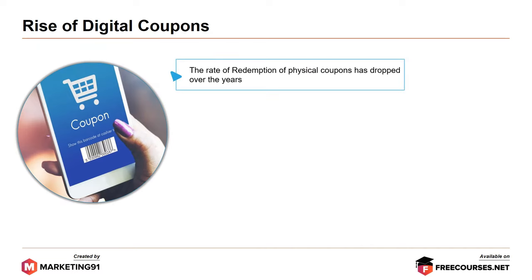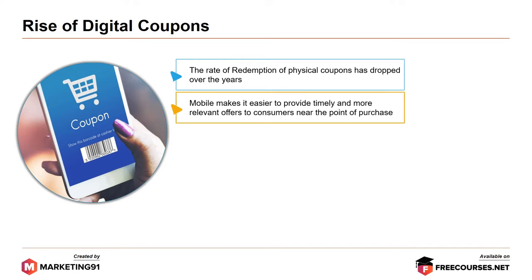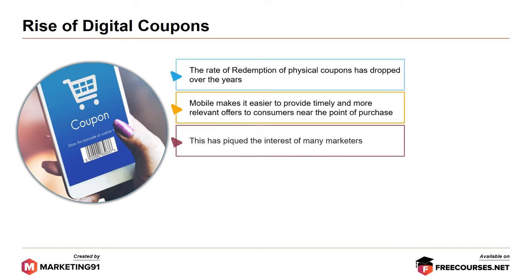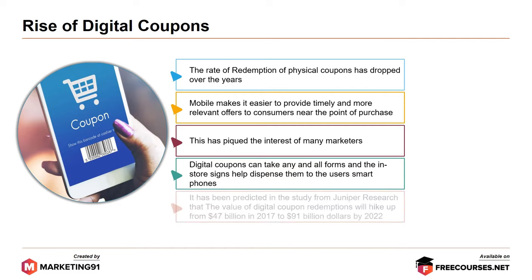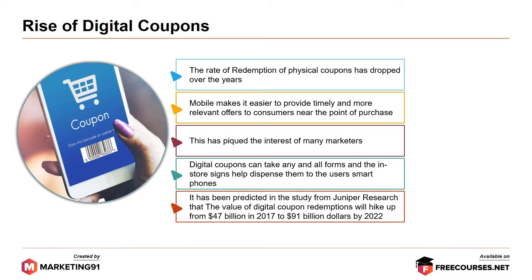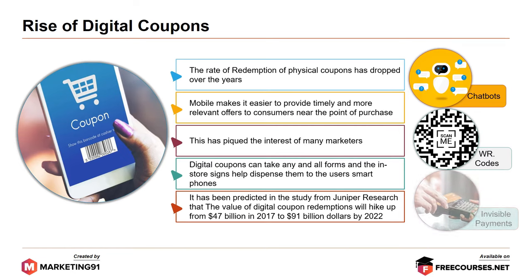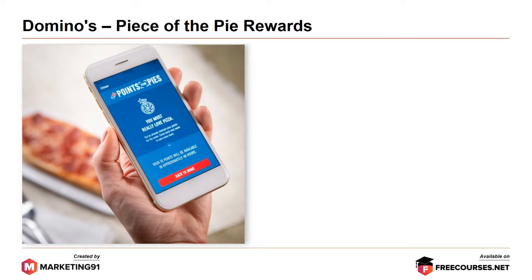Moving on to the rise of digital coupons. The rate of redemption of physical coupons has dropped over the years. Mobile makes it easier to provide timely and more relevant offers to consumers near the point of purchase. Digital coupons can take any and all forms and in-store designs help dispense them to user smartphones. Juniper Research predicted that the value of digital coupon redemptions will rise from $47 billion in 2017 to $91 billion by 2022. Chatbots, QR codes, and invisible payments have been identified as three major technologies with considerable disruptive potential.